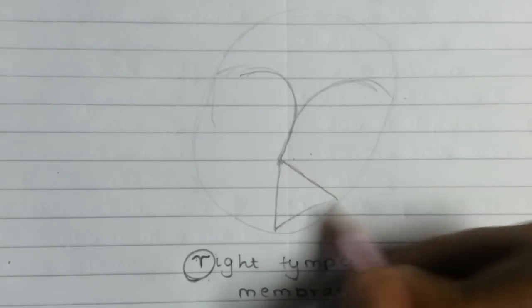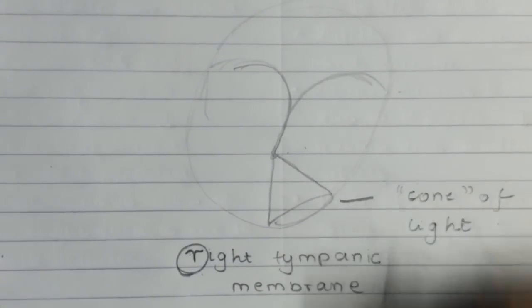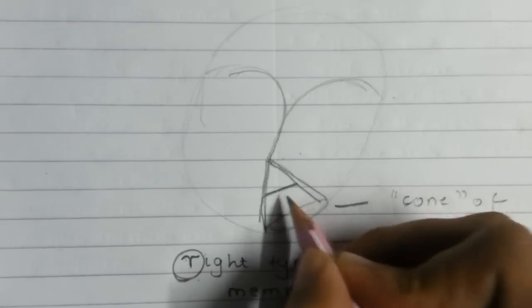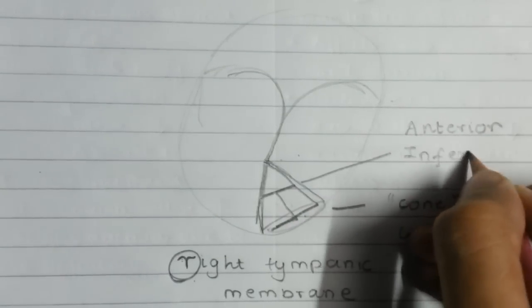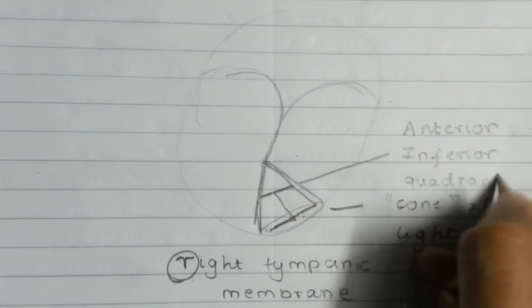Then we draw a cone, literally, to represent the cone of light. Inside the cone we inscribe the letters A and I so that we don't forget that the cone of light is present in the anterior inferior quadrant of the tympanic membrane.